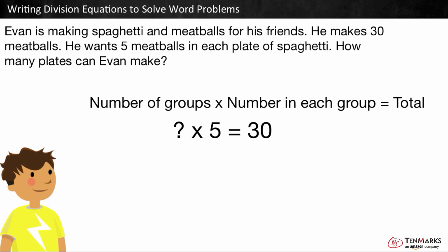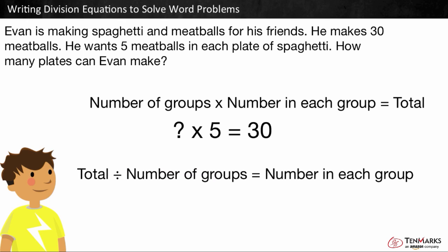You can reverse a multiplication sentence to write a division sentence. The total divided by the number of groups equals a number in each group. 30 meatballs divided by 5 meatballs is equal to some number of plates. Or we can do 30 meatballs divided by some number of plates is equal to 5 meatballs.